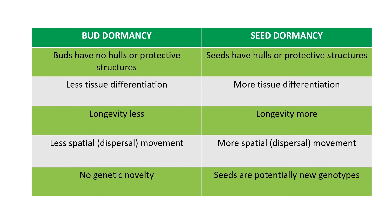In the case of buds, there are no hulls around them — there are no protective structures around them. But in the case of seeds, they have hulls around them. The chilka is available — the coating of the seed that protects them from the harsh environment.